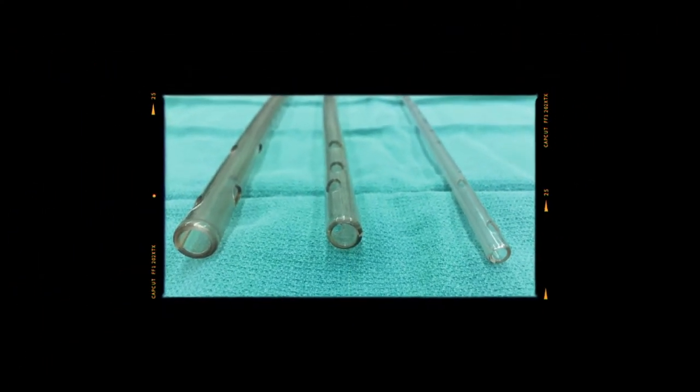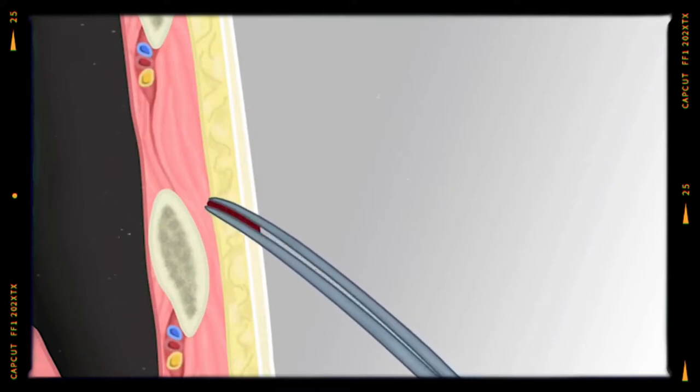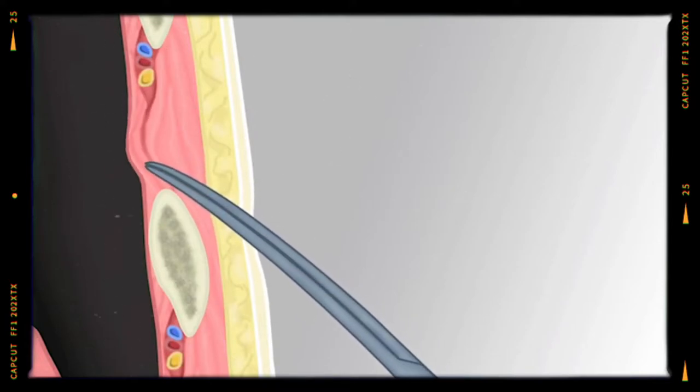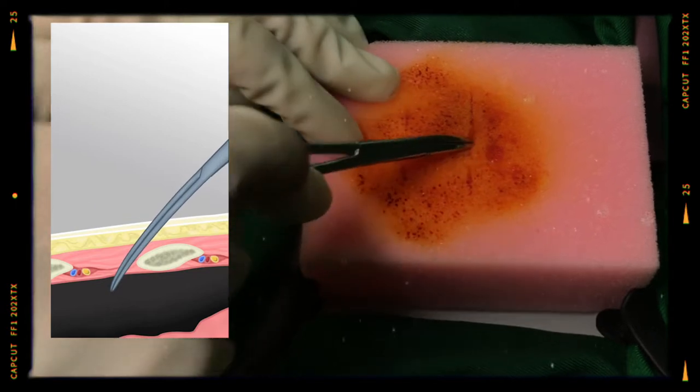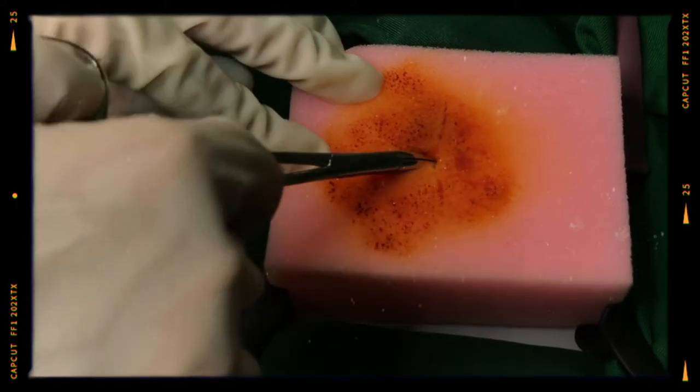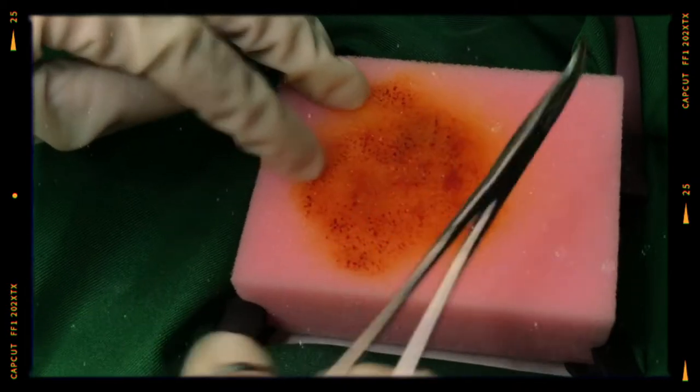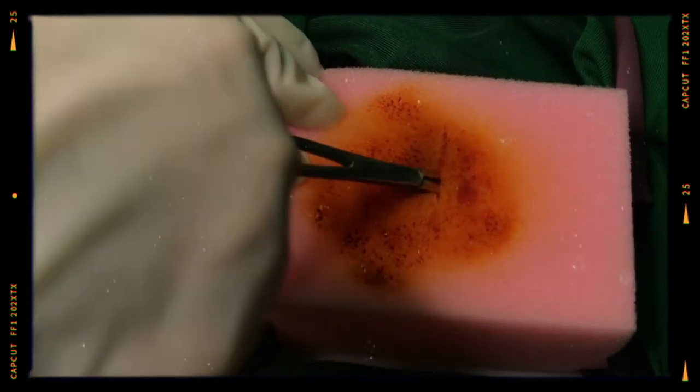Insertion site should be as close as to the upper border of the rib to minimize injury to the nerves and vessels. Insert a curved mayo scissors or curved kelly clamp and cut or separate the tissues to create a tunnel or track in the direction in which the tube is to be inserted.